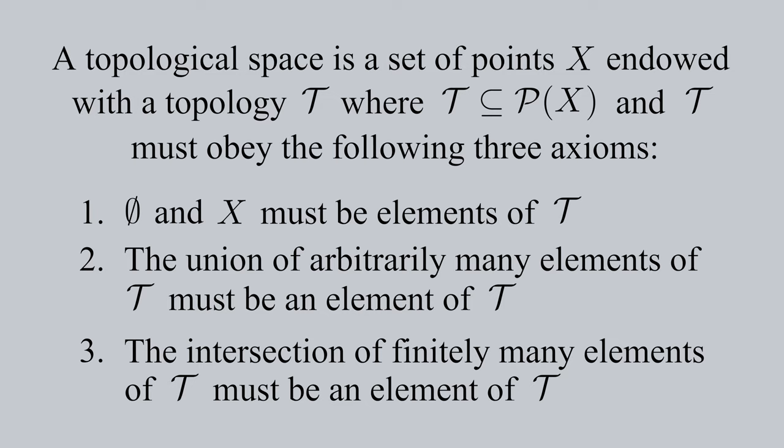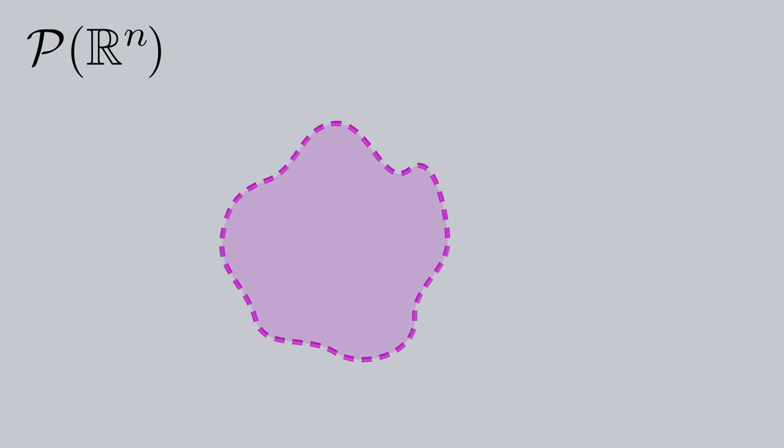This may be a lot to take in at first, so I'll briefly go over the power set and then elaborate on these three axioms. The power set of X is just the set of all subsets of X. For example, if we suppose we're in Rn, this blob without the points at its boundary is in the set. I'll indicate the exclusion of these boundary points with the dashed line and the inclusion with the solid line. If it did contain these points at the edges, the subset would still be in the power set.